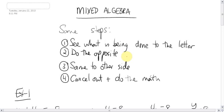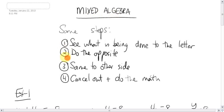The next topic is actually a combination of the last few topics we've done earlier, and it's mixed algebra. Mixed meaning adding, subtracting, multiplying, dividing, and solving equations. So it's all the stuff we've done before, just all mixed up.